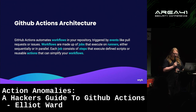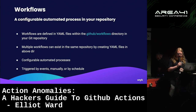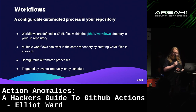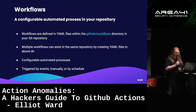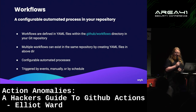Each job consists of steps that execute defined scripts or reusable actions. A workflow is defined in YAML format and these files are located within a directory in the GitHub repository called `.github/workflows`. If you want multiple workflows — one for building, one for checking spelling in markdown files — you create separate YAML files within this directory. They can be highly configured and are triggered by events, manually, or on a schedule.